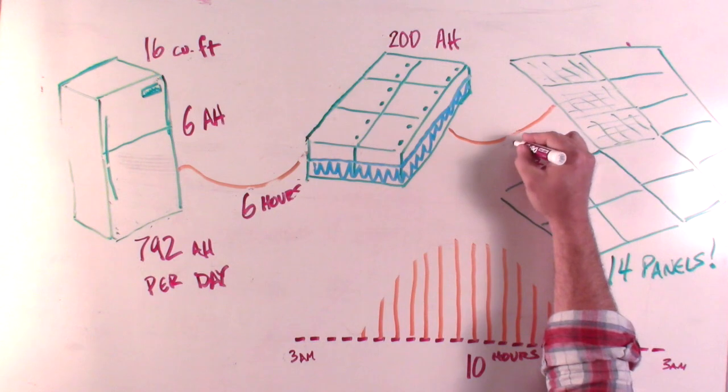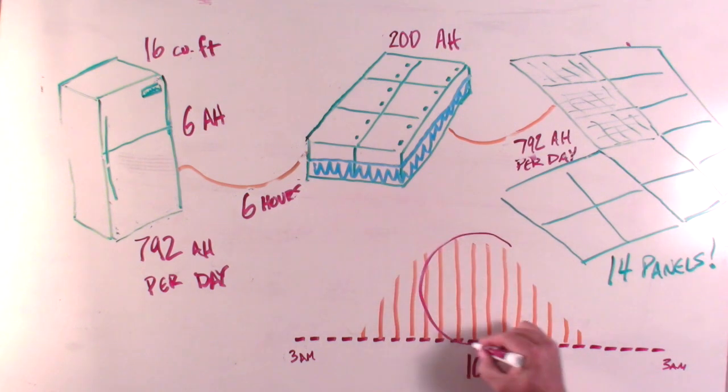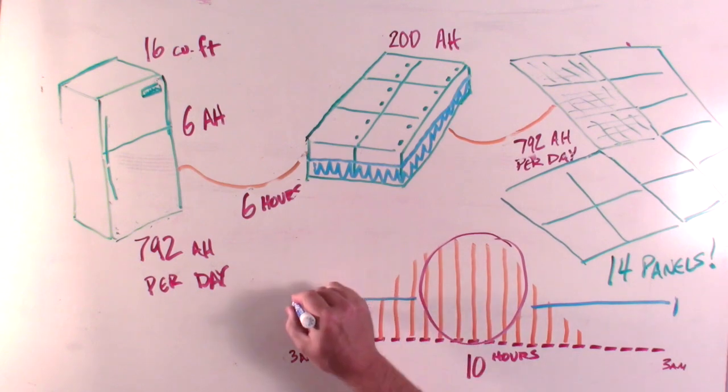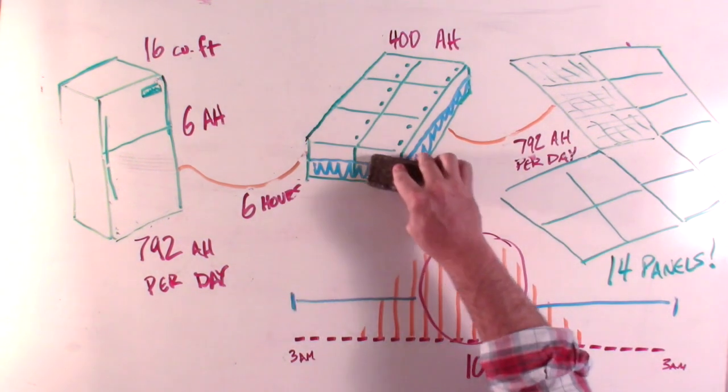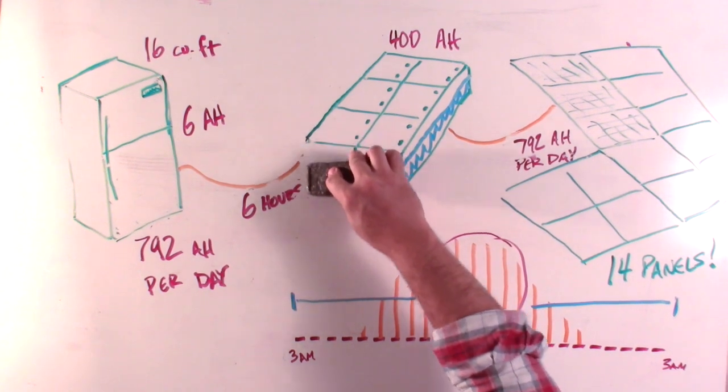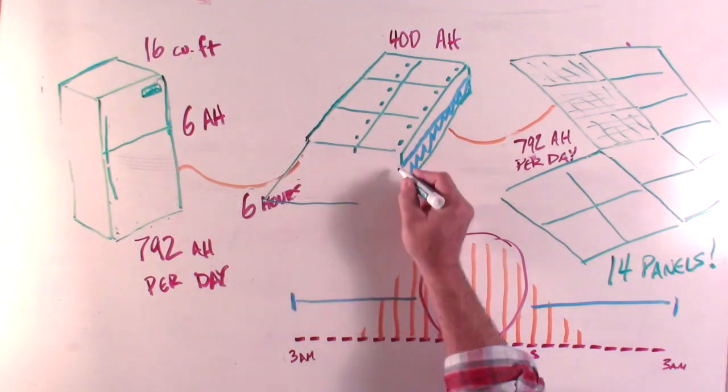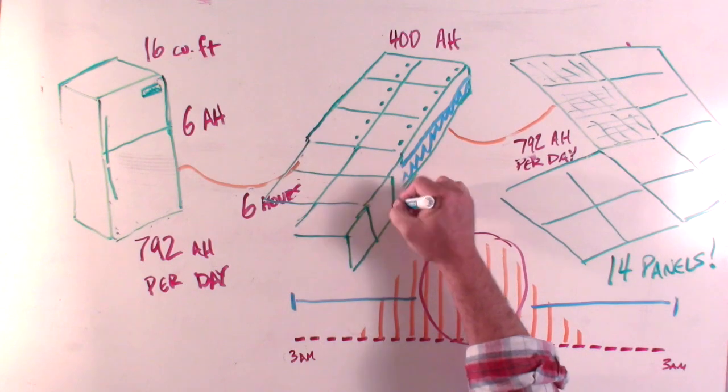And although I know I've proven my point, it even gets worse because those 792 amps are produced mostly during the day, during the middle of the day. The rest of the day, they're producing next to nothing, which means you would need at least 400 amp hours of reserve capacity in your batteries. And since you can use only 50% your battery's capacity, you'll need about 800 amp hours of battery capacity. And since the typical 12 volt RV battery has about a 75 amp hour capacity, you're going to need about 11 of them. There goes your basement storage.